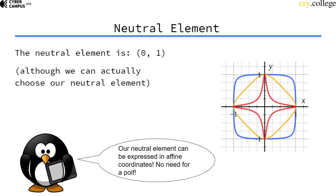The neutral element is usually (0, 1), although we can actually choose the neutral element, but we don't have to go into that. Our neutral element can be expressed in affine coordinates just using x and y. So there's actually no need for a point at infinity. We do have a neutral element that we can just treat as a normal point. That sounds quite cool.